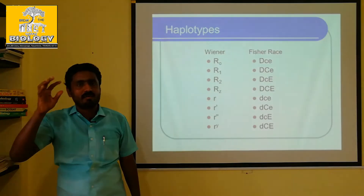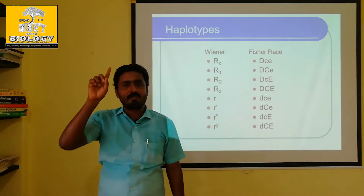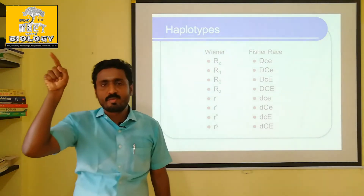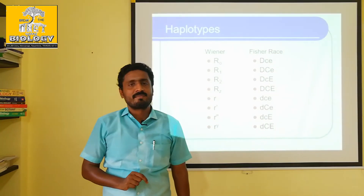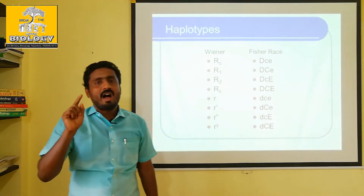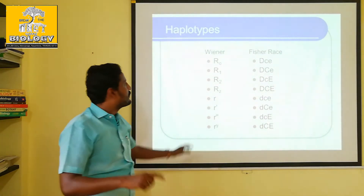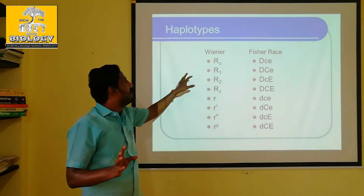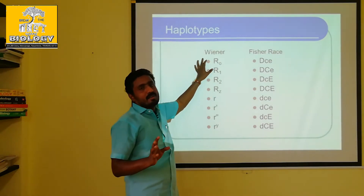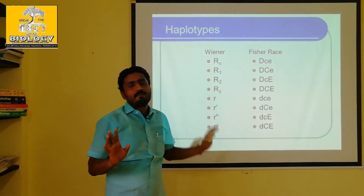It is the monohybrid cross. You have a capital T, the small t — just like in Mendel's monohybrid cross. If we read this rule, it is the same concept applied to Venus.